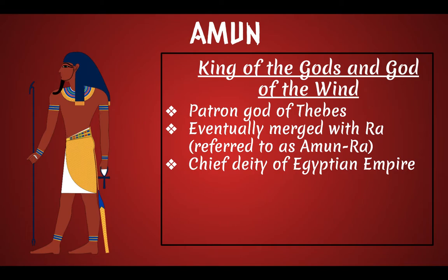Amun is the king of the gods and he's the god of the wind. He's the patron god of Thebes. Thebes is in upper Egypt — lower Egypt is where the pyramids are, up close to the delta of the Nile by the Mediterranean, where Cairo is. Thebes is south of that, where there's a bend in the Nile River. Amun will eventually merge with Ra and so he's often referred to as Amun-Ra, and he is the chief deity of the Egyptian Empire. Because he's merged with Ra, he's the head god.